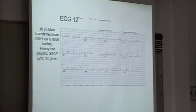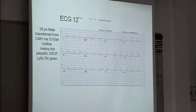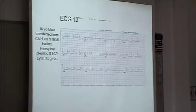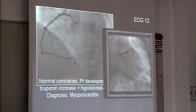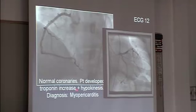16-year-old male transferred from an outside hospital with a STEMI — so a 16-year-old with a STEMI, just to make you wonder what's going on. He had chest pain and pleuritic pain, and got lytic therapy. I don't think I've ever seen a 16-year-old get lytic therapy except for this patient. You can see the inferior ST elevations — you don't really see reciprocal changes here. He had normal coronaries, but a rise in troponin, so he did have an infarct technically, and he did have abnormal wall motion. His diagnosis was myopericarditis.